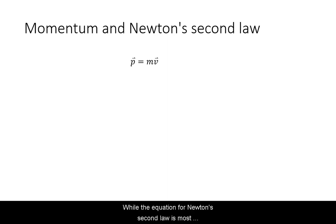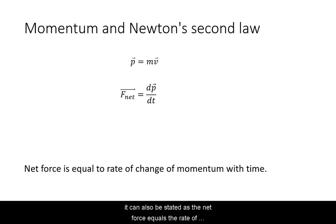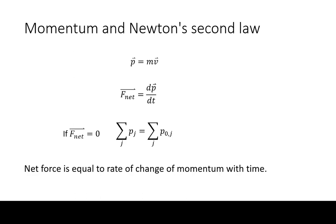While the equation for Newton's second law is most frequently stated as net force equals mass times acceleration, it can also be stated as the net force equals the rate of change of momentum with time. When the net outside force on an object or system of objects is zero, momentum stays constant. This is known as conservation of momentum.